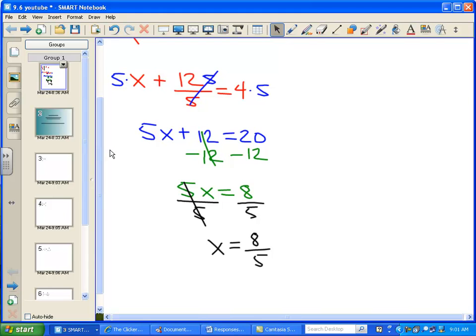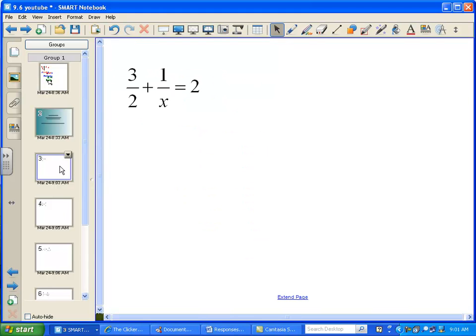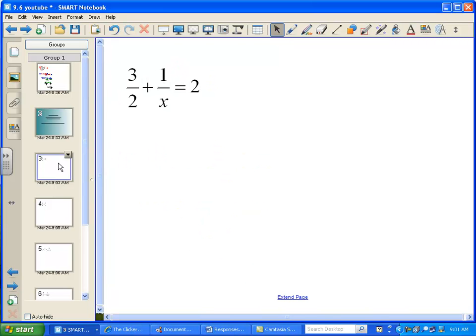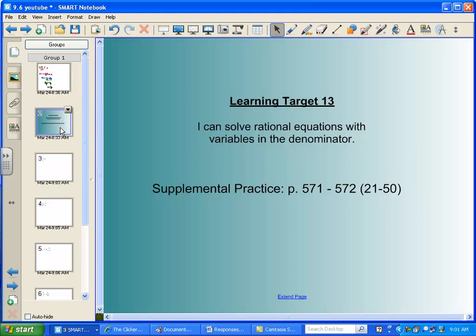So here's another one for you. This one's a little bit different because now I've got the x in the denominator, which I didn't have before, and we've got to figure out a way to solve these equations where the x goes from being in the numerator to down in the denominator. So that leads us to learning target 13, which is: I can solve rational equations with variables in the denominator. There's some supplemental practice for you if you need it or want to get some more practice in.